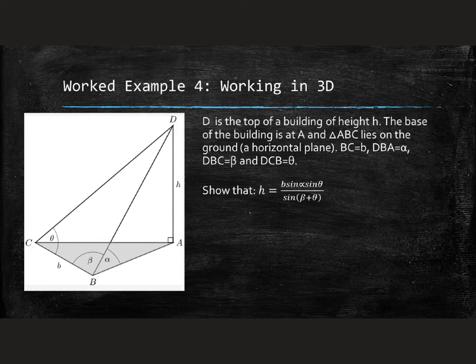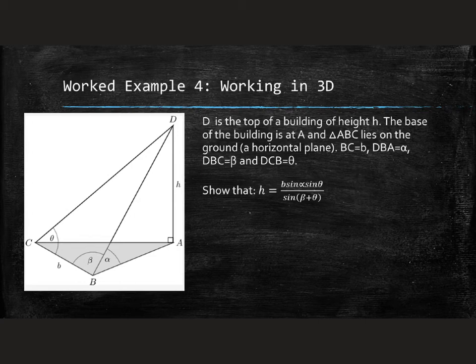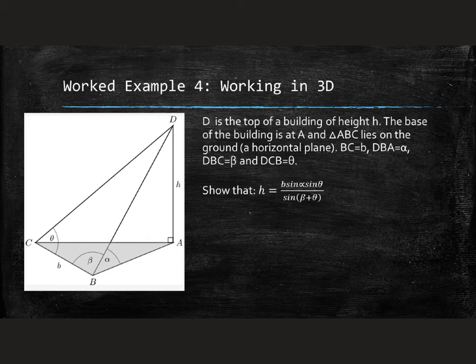Worked example four has four triangles in a 3D space. D is the top of a building with height H and right angles at the base A. Triangle ABC lies on the ground. BC equals lowercase b, angle DBA is alpha, angle DBC is beta, and angle DCB is theta. Show that H equals b times sine alpha times sine theta, all over sine of (beta plus theta). These variable-based proofs require breaking apart the triangles first, so pause and try that before continuing.